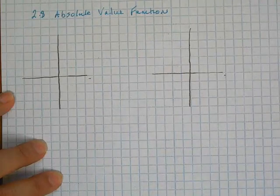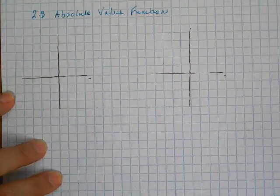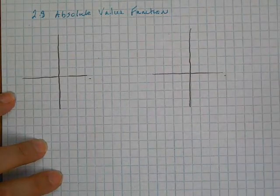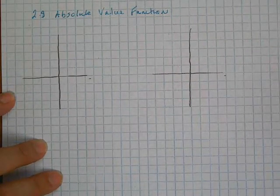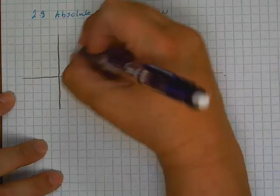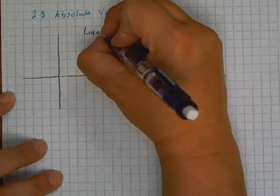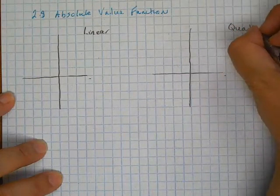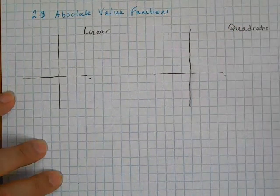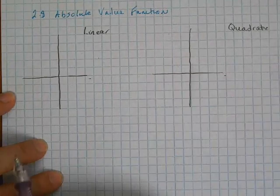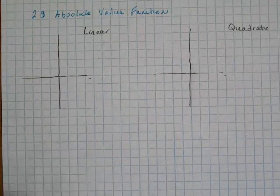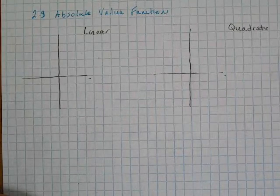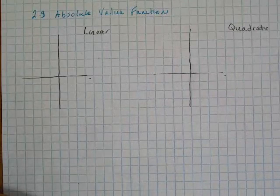I want to start lesson 2.8 on absolute value functions by reminding you about a couple of functions you talked about in Algebra 1. One of those functions was a linear function, and the other was the quadratic function. I'm taking these notes on graph paper just because I think it'll be easier for you to understand if you can see things to scale. But you don't need graph paper by any means at home.